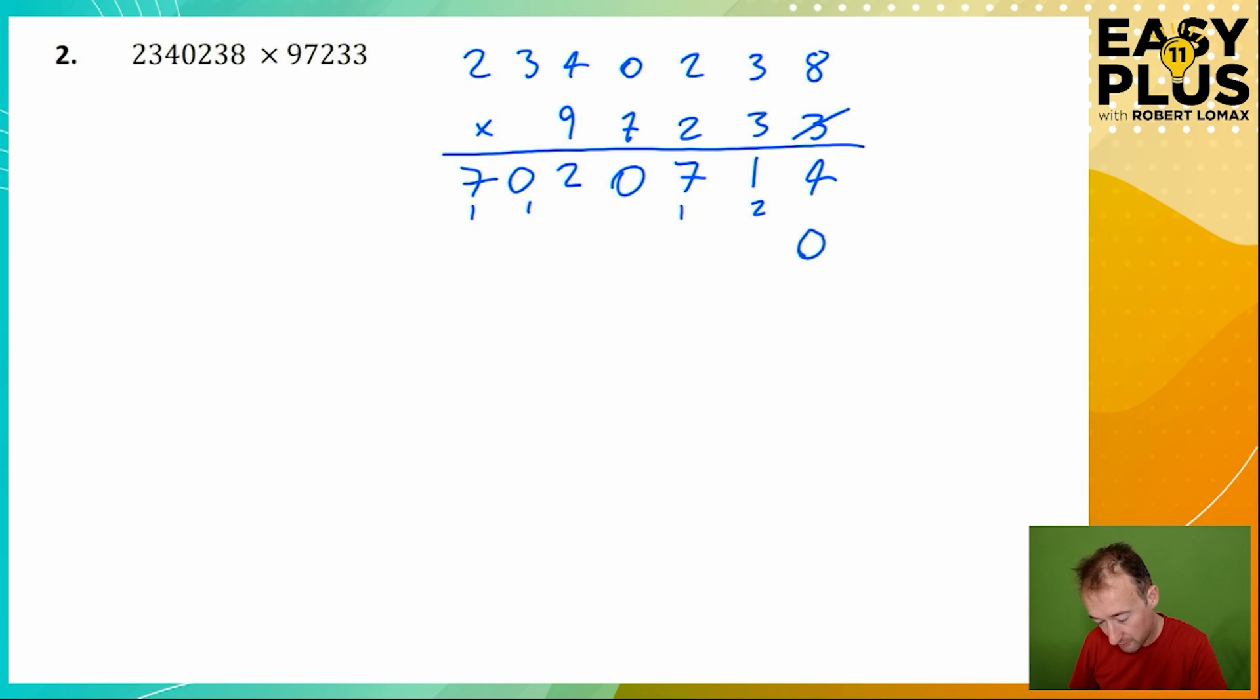We start the next line with 0. Now for the next one we also need to times by 3, so it's going to be exactly the same apart from the 0 at the end. 4, 1, 7, 0, 2, 0, 7.